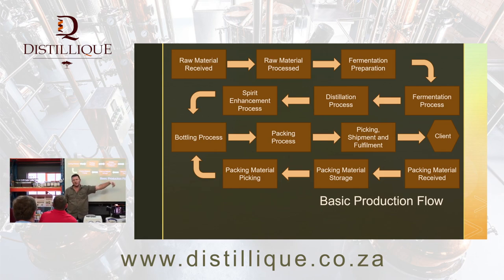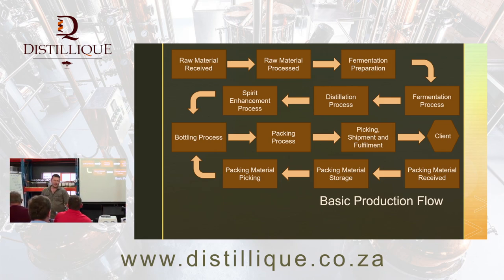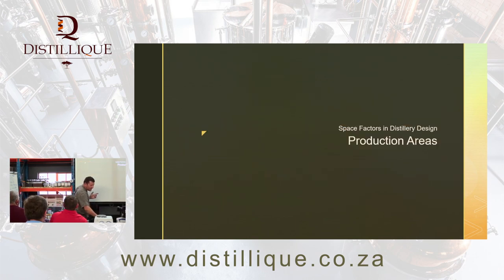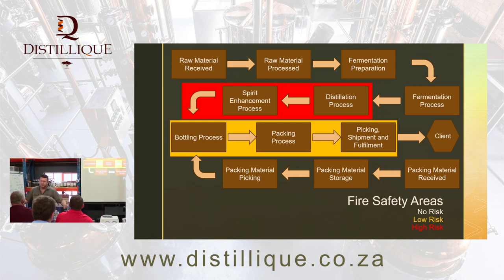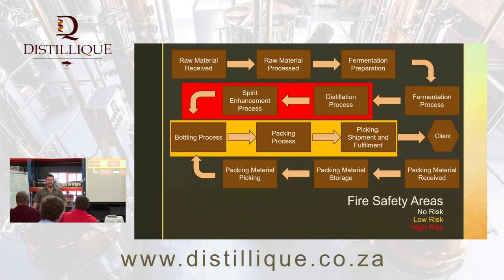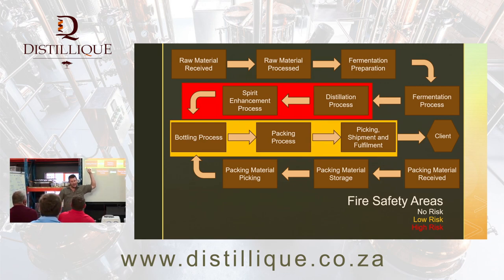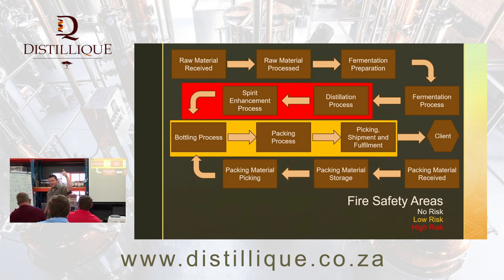Then there's picking, shipment and fulfillment, and finally it goes to the client. That's the flow that has to happen in the distillery. Now if we apply that flow to the production areas, we see yellow areas are low risk and red areas are high risk. You're never going to light fermentation on fire — it isn't happening. But the moment we start distilling and we're working with high percentage alcohol, now we're in a high risk area in terms of fire.